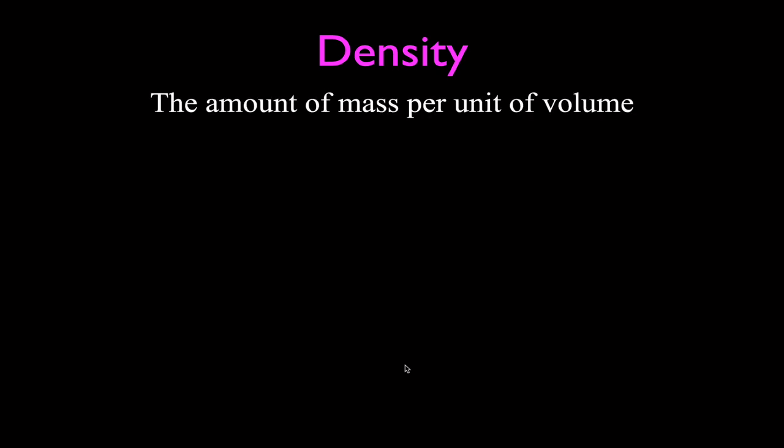Now let's go over quickly what density is. I've made other videos about density, how to solve for it, and an explanation of what density is — you can link to those videos in the upper right-hand corner. Density is defined as the amount of mass per unit of volume. The symbol is rho, and it's calculated as mass divided by volume.